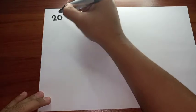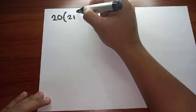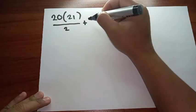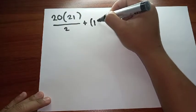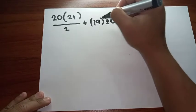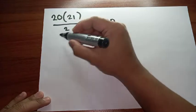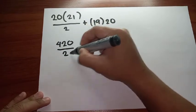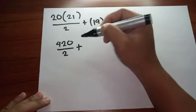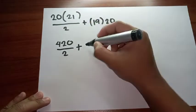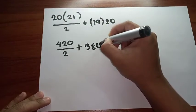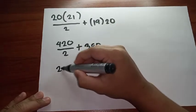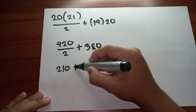20 times 20 is equal to 420 over 2 plus 19 times 20 is equal to 380. 420 divided by 2 is equal to 210 plus 380.